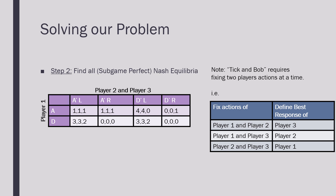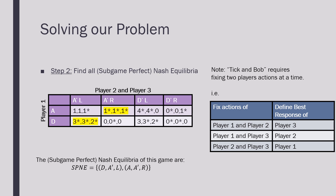The tick-and-bob procedure is going to be a little bit different here because we're going to have to fix the actions of two players at a time and define the best response of the other player. We're going to first fix the actions of player one and player two and define the best response of player three, then player one and player three and define the best response of player two, and lastly fix the actions of player two and player three and define the best response of player one.